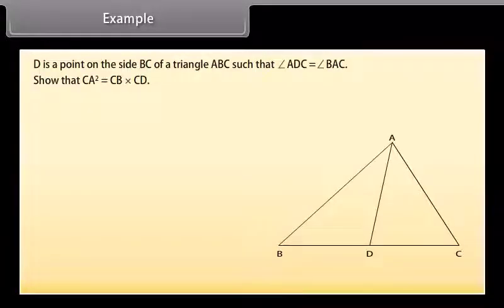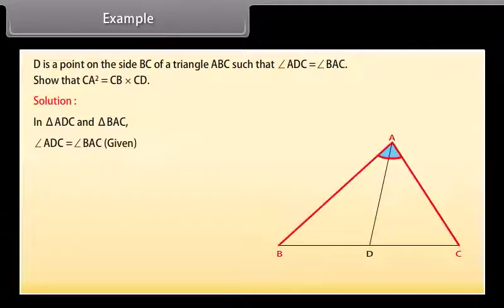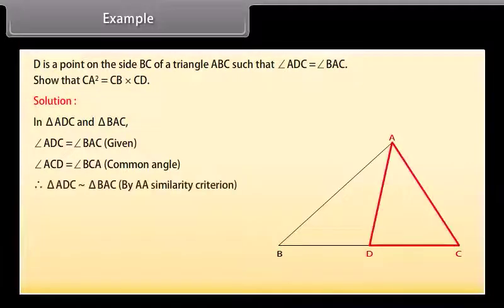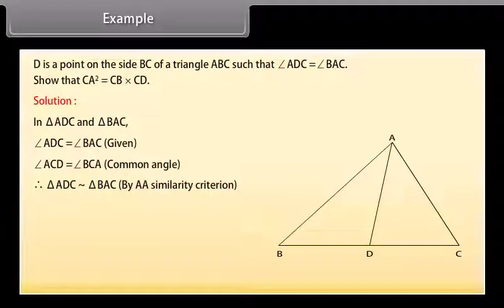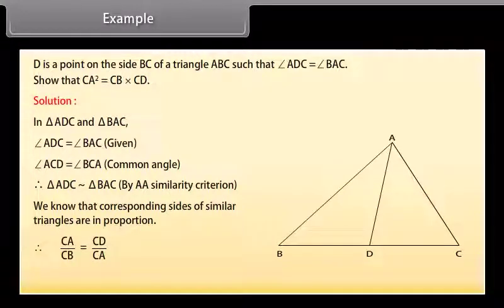D is a point on side BC of triangle ABC such that angle ADC = angle BAC. Show that CA² = CB · CD. Solution: in triangles ADC and BAC, angle ADC = angle BAC (given) and angle ACD = angle BCA (common angle). Therefore triangle ADC is similar to triangle BAC by AA similarity criterion. Since corresponding sides of similar triangles are in proportion: CA/CB = CD/CA, which implies CA² = CB · CD.